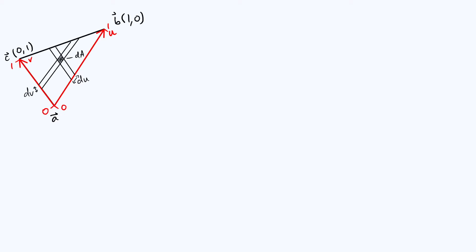We've got a little diagram of our triangle up at the top left. We've got position vectors a, b, and c representing the three vertices, and I defined a UV coordinate system where the u-axis goes from a to b and the u coordinate runs from 0 to 1. Similarly, the v-axis runs from a to c and the v coordinate goes from 0 to 1. So this is the basic setup.